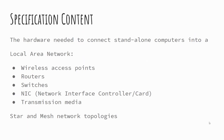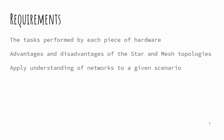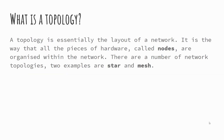The specification content we're looking at today covers the hardware needed to connect standalone computers into a network. There are examples of different hardware: wireless access points, routers, switches, network interface controllers or cards, and transmission media, as well as two topologies — star and mesh. We're looking to understand what each piece of hardware is used for, the advantages and disadvantages of each topology, and how to apply this knowledge to given scenarios.